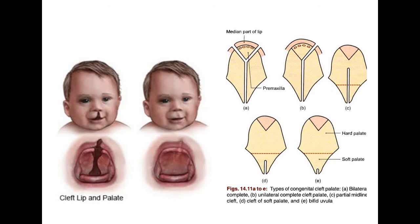The soft palate comprises epithelium, connective tissue, and muscles. The epithelium is derived from ectoderm of the maxillary process. The muscles are derived from the first, fourth, and sixth branchial arches. Passavant's ridge: some fibers of the palatopharyngeal sphincter are left behind and form a sphincter inner to the superior constrictor muscle at the level of the hard palate. These fibers constitute Passavant's muscle, which is best developed in cases of cleft palate to compensate for the deficiency.